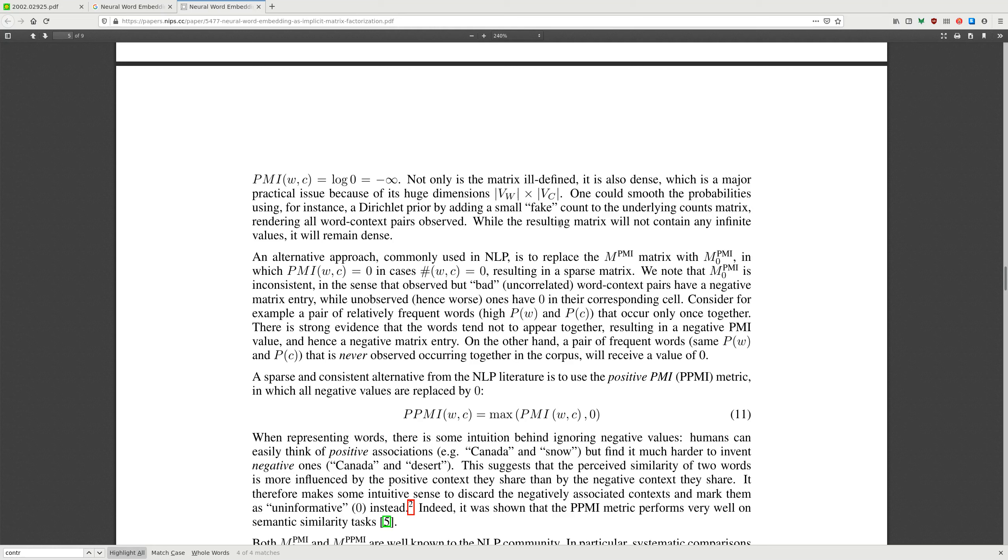While the resulting matrix will not contain any infinite values, it will remain dense. An alternative approach commonly used in NLP is to replace the PMI matrix with positive PMI, which is max of PMI and 0 in cases where word count is 0, resulting in a sparse matrix.